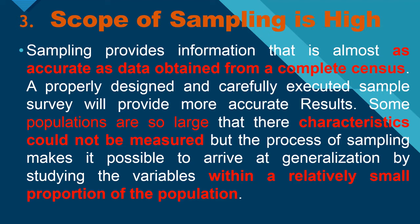Number 3: Scope of Sampling is High. Sampling provides information that is almost as accurate as obtained from a complete census or from the population. A properly designed and carefully executed sample survey will provide more accurate information as compared to the population. Some populations are so large that their characteristics could not be measured, but the process of sampling makes it possible to arrive at generalizations by studying a relatively small portion of the population.